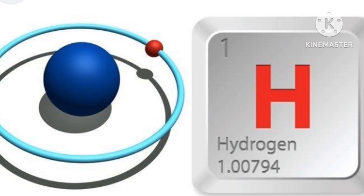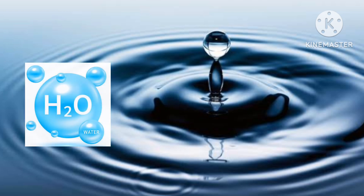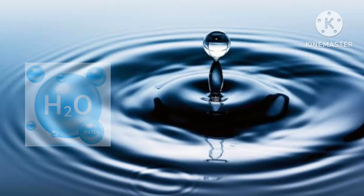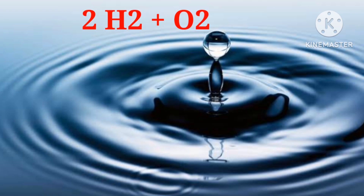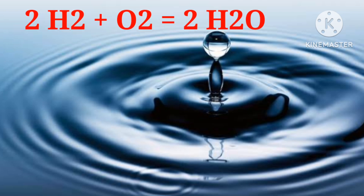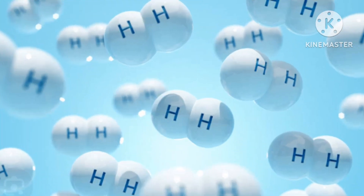One of the most important chemical properties of hydrogen is that it burns with oxygen to form water, H2O. Indeed, the name hydrogen is derived from a Greek word meaning 'maker of water.' The chemical equation for generating water is: 2H2 + O2 → 2H2O.